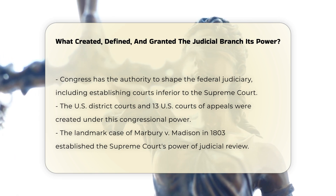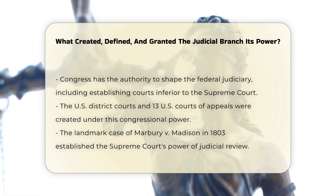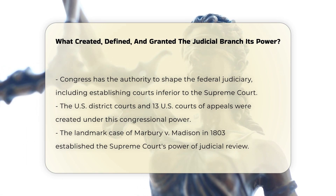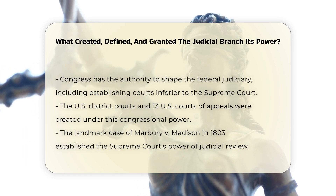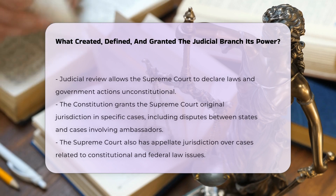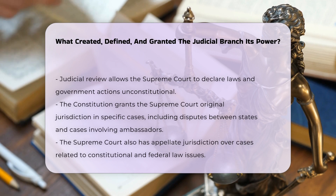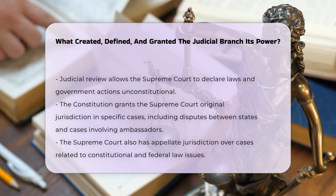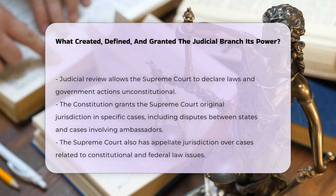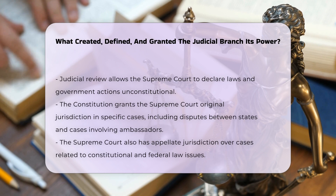The Supreme Court's power of judicial review was established through the landmark case of Marbury v. Madison in 1803. This case determined that the Supreme Court has the authority to declare laws and government actions unconstitutional, a power not explicitly stated in the Constitution but derived from its interpretation.